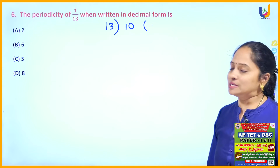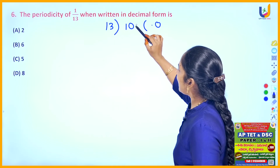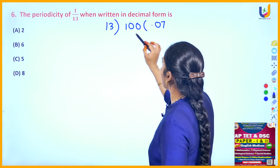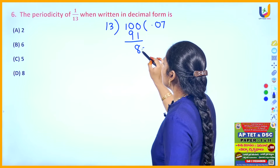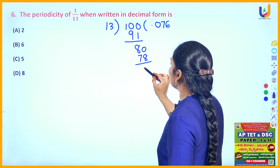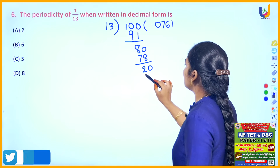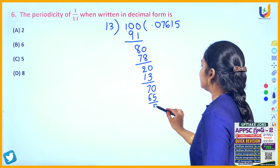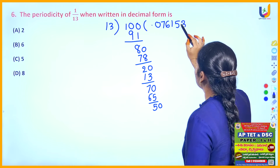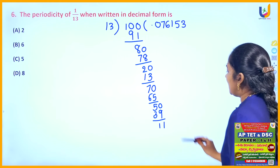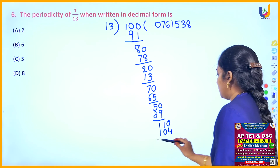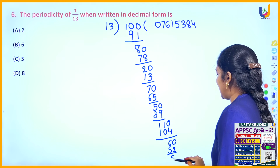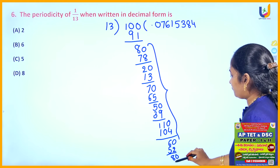As 1 is less than 13, put a decimal point and take a zero, giving 10 — still less than 13, so take another zero giving 100. 13 sevens are 91, remainder 8. Bring down 0: 80. 13 sixes are 78, remainder 2. Bring down 0: 20. 13 ones are 13, remainder 7. Bring down 0: 70. 13 fives are 65, remainder 5. Bring down 0: 50. 13 threes are 39, remainder 11. Bring down 0: 110. 13 eights are 104, remainder 6. Bring down 0: 60. 13 fours are 52, remainder 8 — and the repetition starts again.